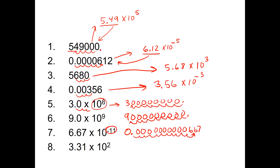Then lastly, this last one was one of the easier ones. The decimal place just moved two spots over, so 3.31 times 10 to the second would be the same as 331.